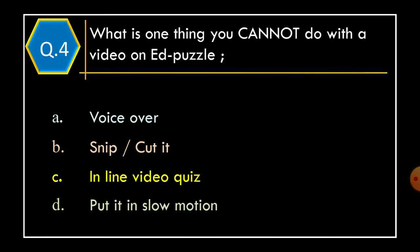Question 4: What is one thing you cannot do with a video on EdPuzzle? Option A: Voice Over. Option B: Snip or Cut it. Option C: Inline Video Quiz. Option D: Put it in slow motion.